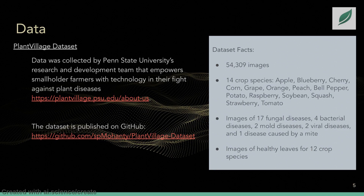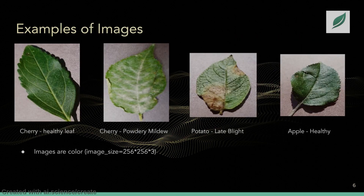The images are leaves affected by 21 different types of diseases, including fungal diseases, bacterial, mold, viral, and diseases caused by a mite. Here are some examples of the data — healthy images and images of leaves affected by different diseases. The dataset contains only plant leaves. All images are color, and the image size is 256 by 256 in three channels.